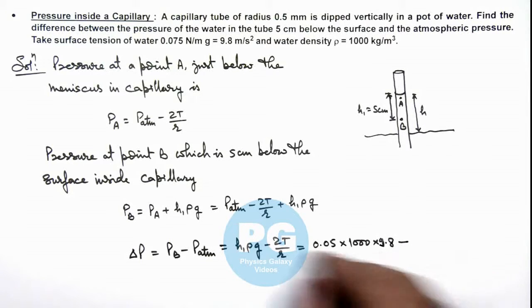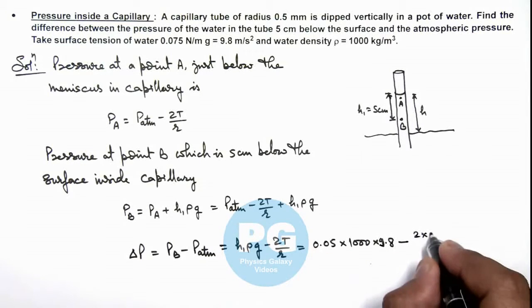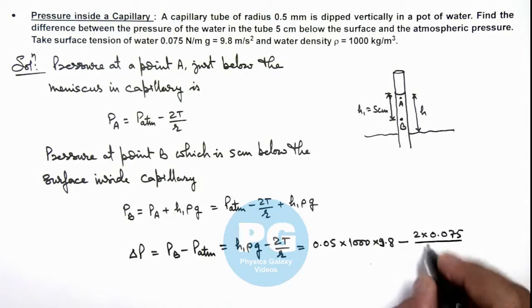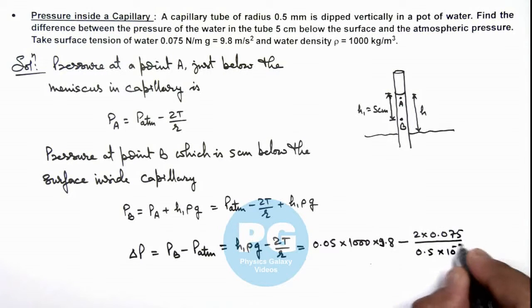So here, 2 multiplied by 0.075 divided by radius of capillary we can use 0.5 × 10⁻³.